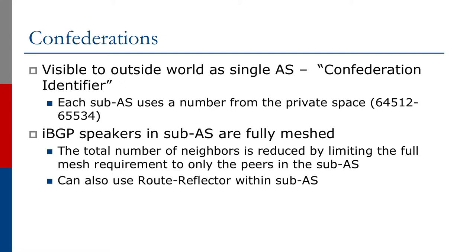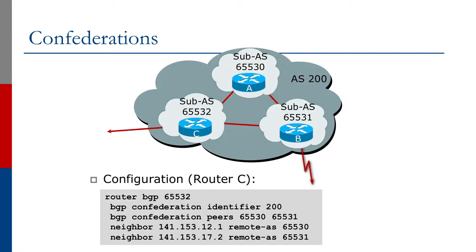Each sub-AS EBGP peers with each other. For example, here we have AS 200, which is what the world sees, but it's actually made up of three sub-autonomous systems: AS 65530, 65531, and 65532. These three sub-ASs EBGP peer with each other while retaining a lot of the IBGP features. Each sub-AS — 65532 and 65531 — also has an EBGP session with the outside world.